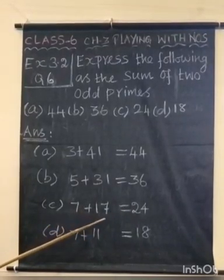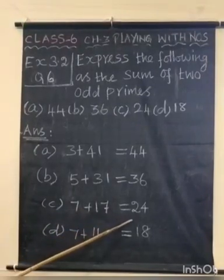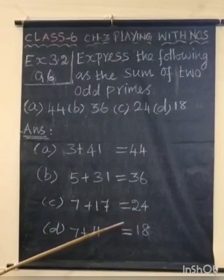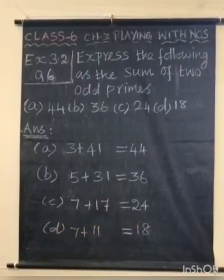5 plus 19 is also possible. 5 plus 19 equals 24. This is also possible.